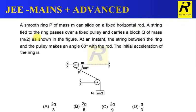A smooth ring P of mass M can slide on a fixed horizontal rod. A string tied to the ring passes over a fixed pulley and carries a block Q of mass M by 2 as shown in the figure. At an instant, the string between the ring and the pulley makes an angle 60 degree with the rod. The initial acceleration of the ring is?